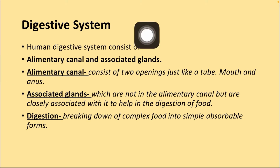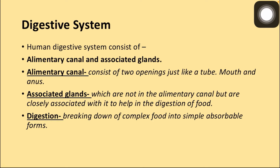The human digestive system consists of the alimentary canal and associated glands. There are two parts: the first part is the alimentary canal, which is a tube through which our food intake passes, and the second part is the associated glands, which help us to digest food.